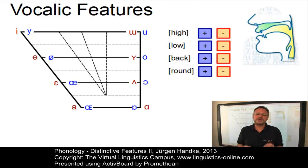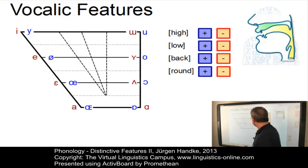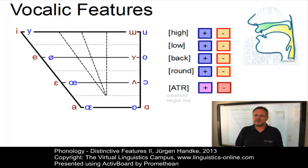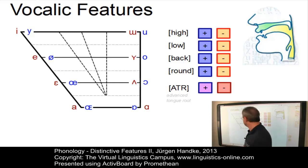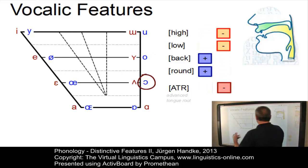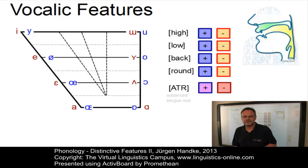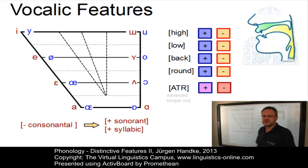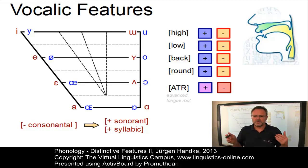Remember we need five features. In order to obtain the four degrees of height — high, mid-high, mid-low, low — the additional binary feature ATR, which stands for advanced tongue root, was introduced. Now we can draw a distinction between mid-high and mid-low vowels, and we have added feature number five as calculated by our formula. So here is [o], cardinal number seven, which is now plus ATR, and [ɔ], which is identical with [o] except that it is now minus advanced tongue root. Since all vowels are minus consonantal, they automatically imply the major class feature plus sonorant and plus syllabic.